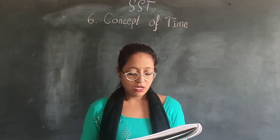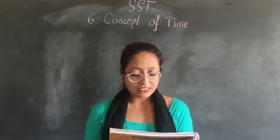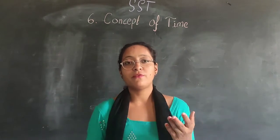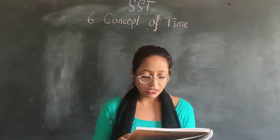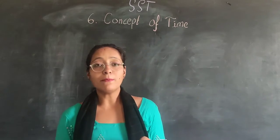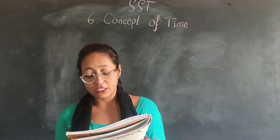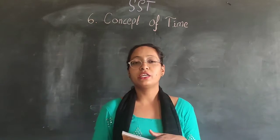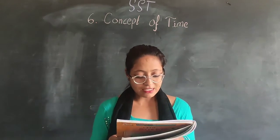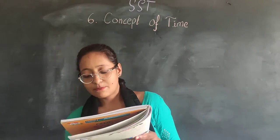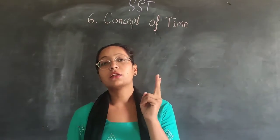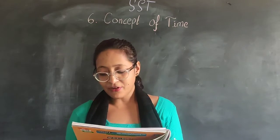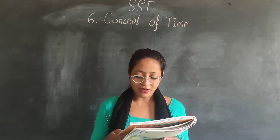Now, what is the span of one year? A year is the period from 1st January to 31st December. A year has 12 months, and this period from 1st January to 31st December is called the span of one year.